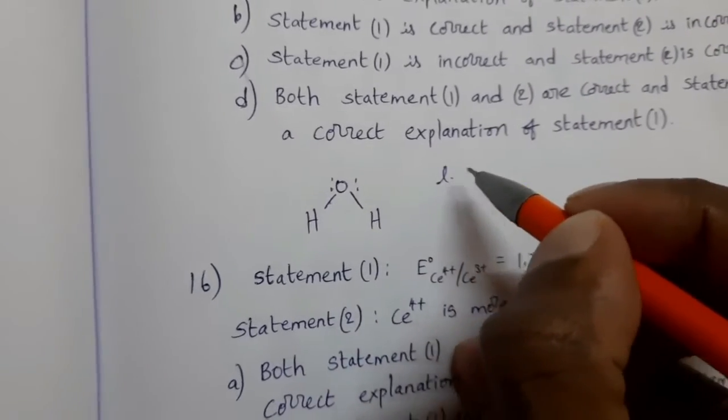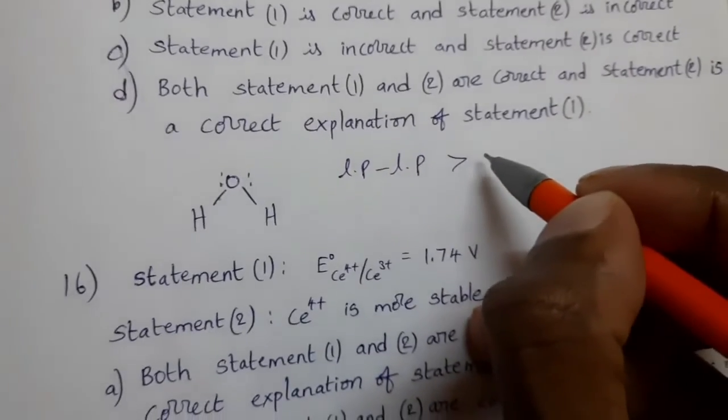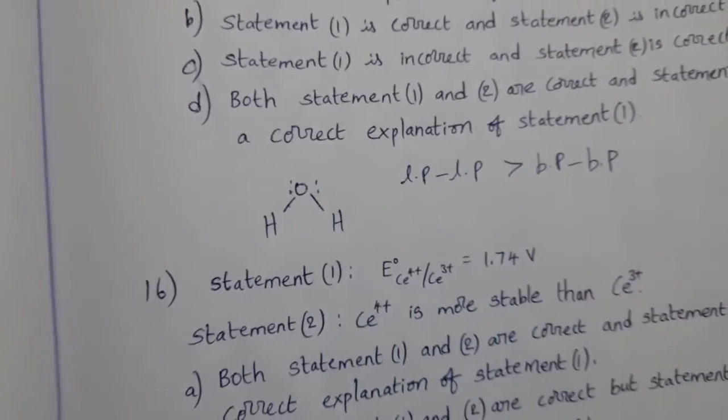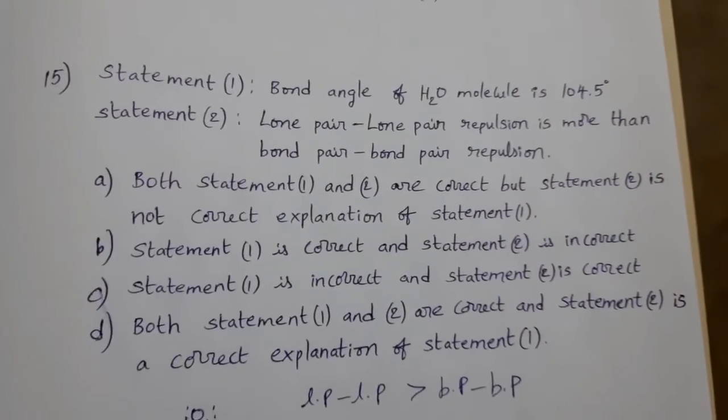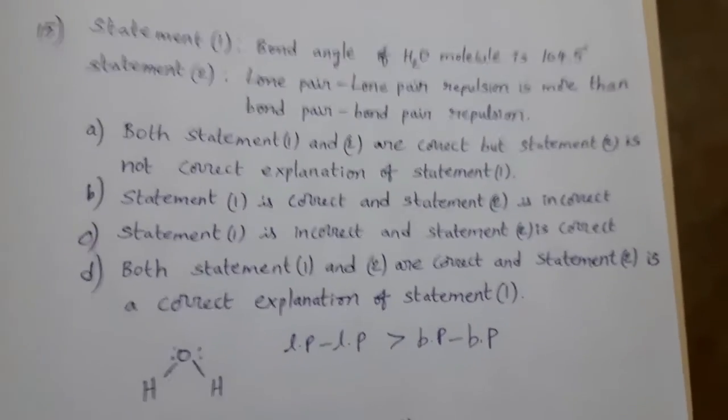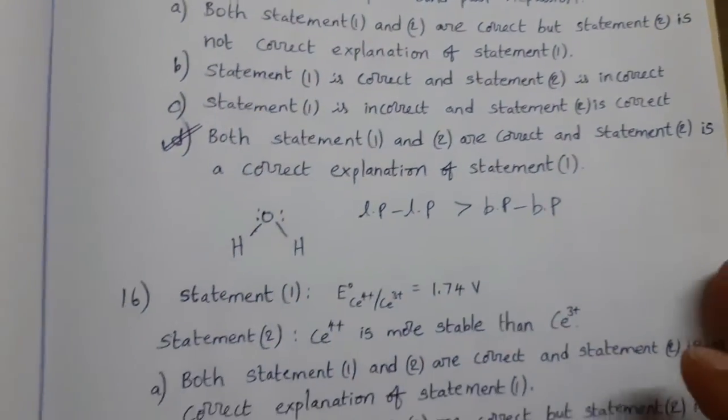That means between these two lone pairs more repulsive forces are there than repulsive forces between these two bond pairs. So, lone pair, lone pair repulsion is greater than bond pair, bond pair repulsion. Statement 1, statement 2 both are correct. Statement 2 is the correct explanation for statement 1. Then what is the suitable option? Option D is the answer.